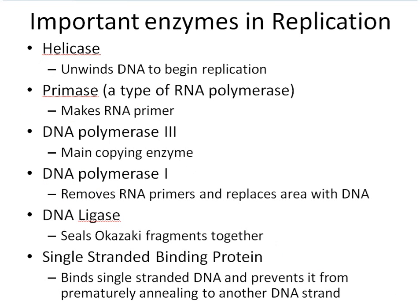Final review of important enzymes: helicase unwinds the DNA; primase makes the RNA primer; DNA polymerase III is the main copying enzyme; DNA polymerase I removes the RNA primer and replaces it with DNA; DNA ligase seals the Okazaki fragments together; and single-stranded binding proteins prevent single-stranded DNA from prematurely annealing to the parent strand instead of waiting for the daughter strand to be synthesized.